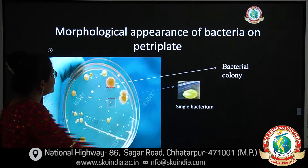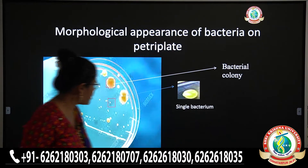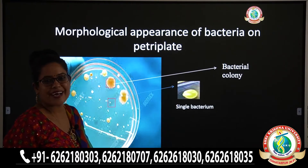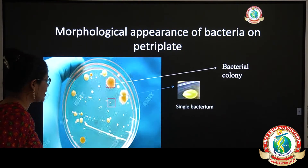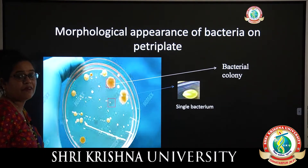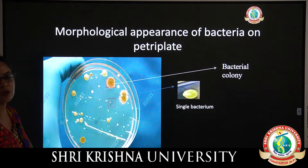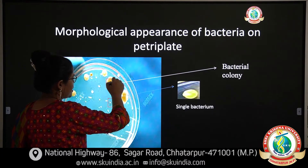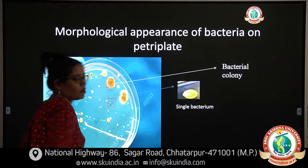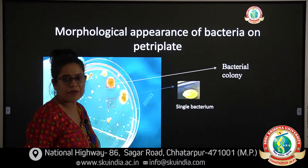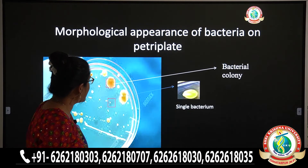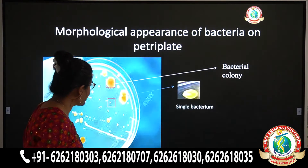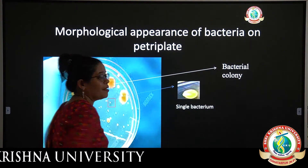This is the morphological appearance of bacteria in a petri plate. A petri plate is a small glass-like instrument which contains specific media — these are the nutritional requirements which help the bacteria to grow. The structure here represents the bacterial colony. A bacterial colony means there are around 200 to 500 bacteria in this specific cluster, and this pinpoint structure is a single bacterium.